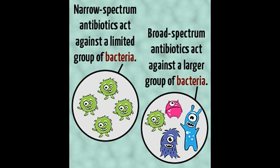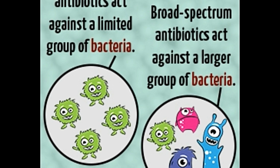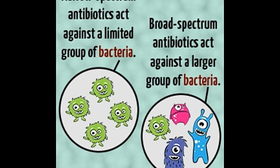Examples — Narrow Spectrum: The best example of a narrow spectrum antibiotic is sodium fusidate, which is formulated to destroy staphylococcal strains of bacteria. Azithromycin, clarithromycin, clindamycin, erythromycin, and vancomycin are some of the medications that belong to this class of antibiotics.